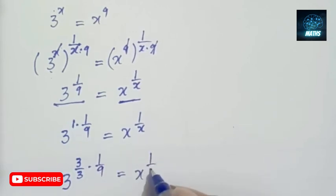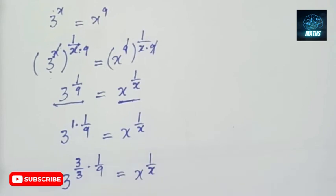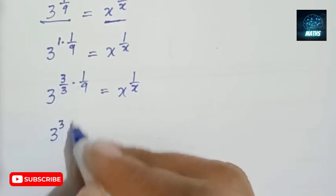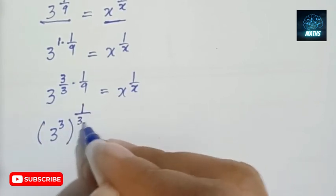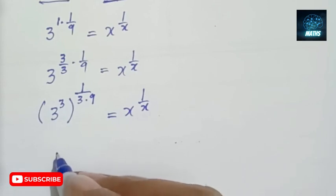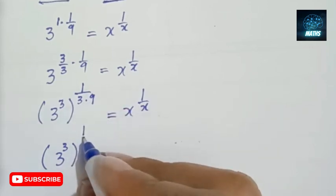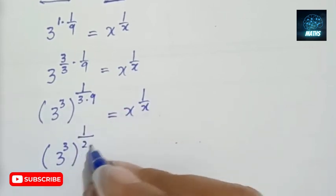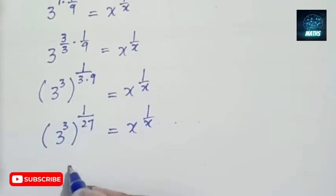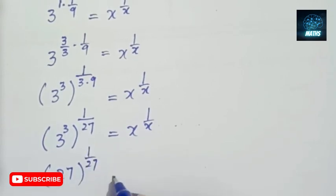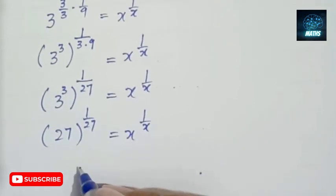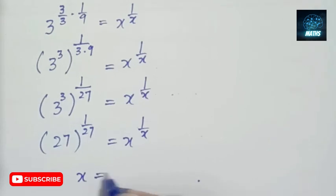I want to achieve the form x to the power 1 over x. Since 3 to the power 3 is 27, I can write 3 to the power 1 over 9 as 27 to the power 1 over 27. This is the same form: 27 to the power 1 over 27 equals x to the power 1 over x. Therefore, x is equal to 27.